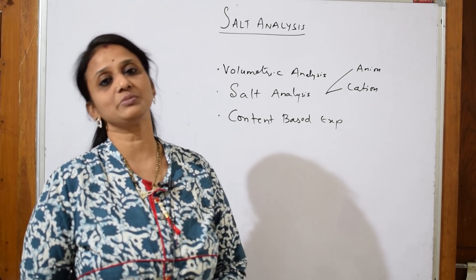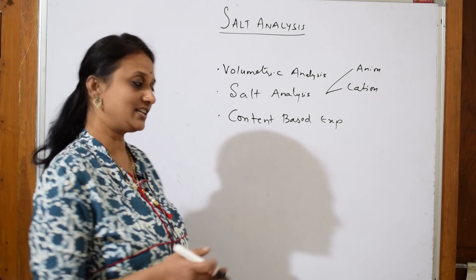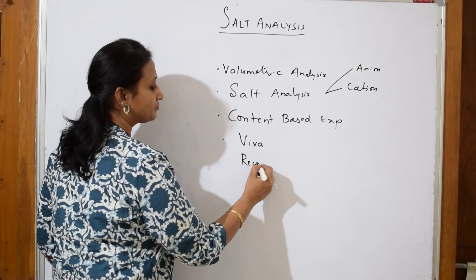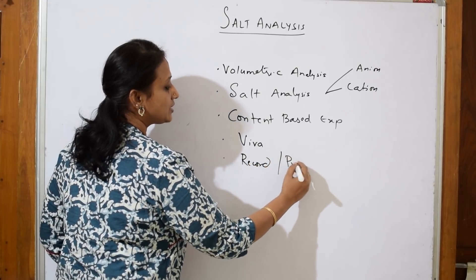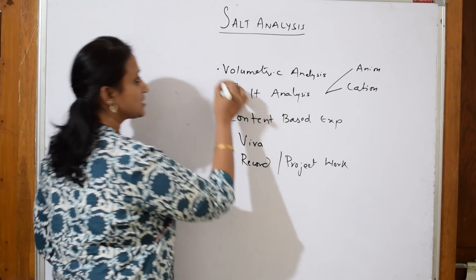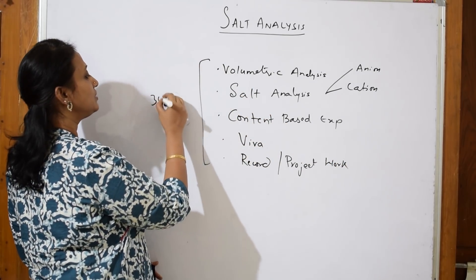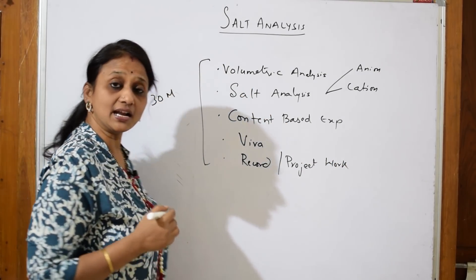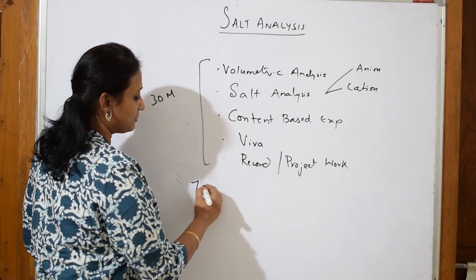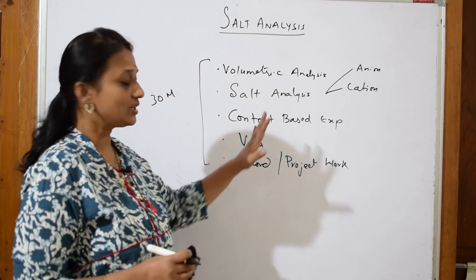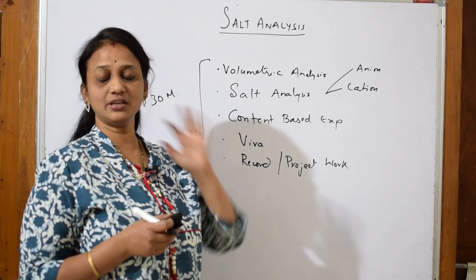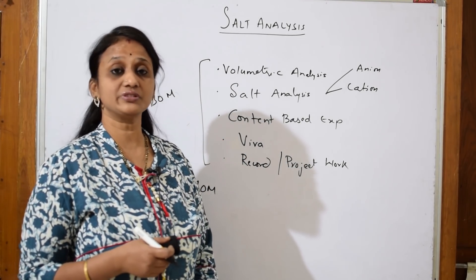These three — volumetric analysis, salt analysis, and the content-based experiment — are compulsory. Different schools will have varying content-based experiments. After this comes your viva, your record, and your project work, all of which are included in the 30 marks. Apart from this, you will be writing the theory exam in the month of March, which is for 70 marks.